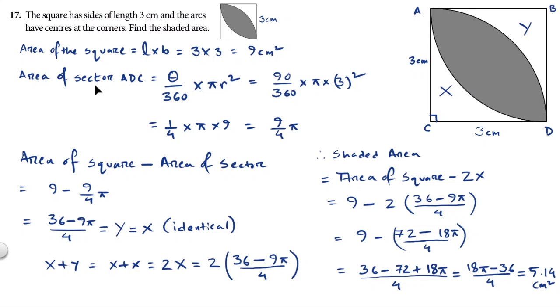Now for the area of the sector ADC, we know the sector formula will be theta by 360 multiplied by pi r square. Since this is a quarter of a circle, this is 90 degrees. So the theta here is 90. So 90 by 360 times pi times 3 square. R is the radius - if this is the center, then this will be the radius for that circle.